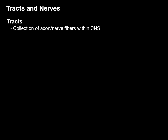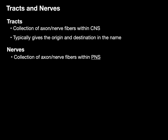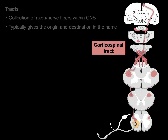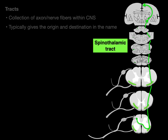What's the difference between a tract and a nerve? Tracts are collections of axons or nerve fibers within the central nervous system, and they're typically named by their origin and destination. For example, the corticospinal tract — shown in salmon color — arises in the cortex and descends to the spinal cord: cortico for cortex, spinal for spinal cord. Here's another one — the spinothalamic tract, shown in green — it arises in the spinal cord and goes up to the thalamus.